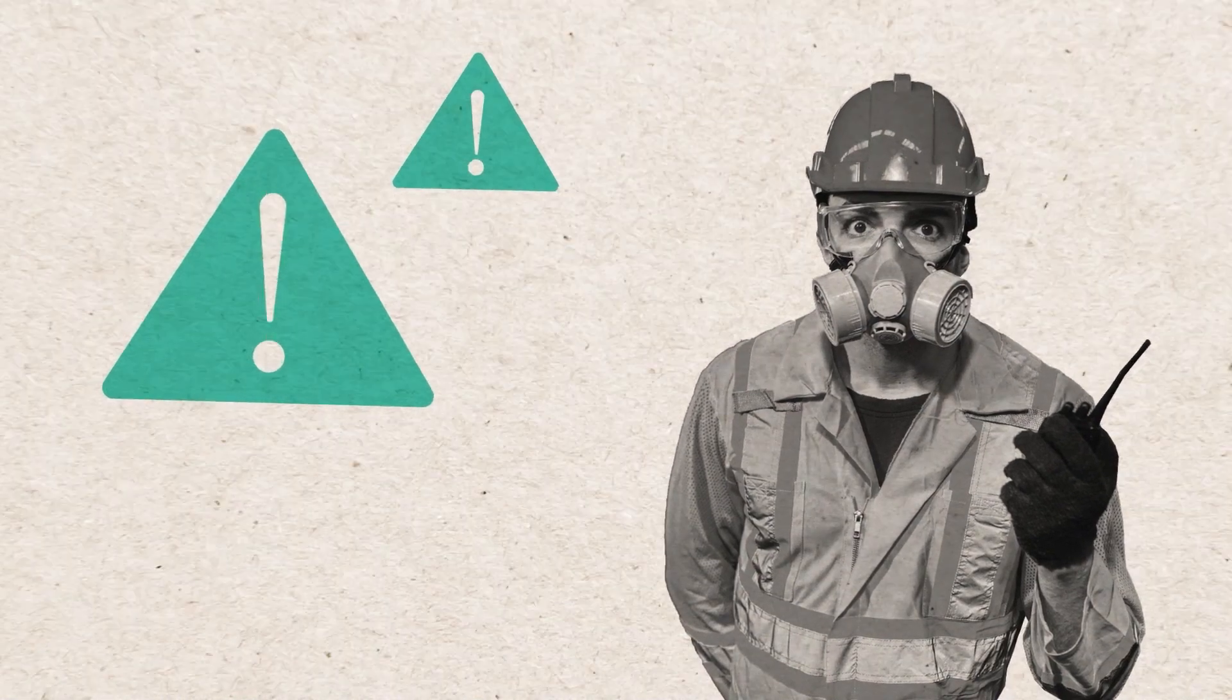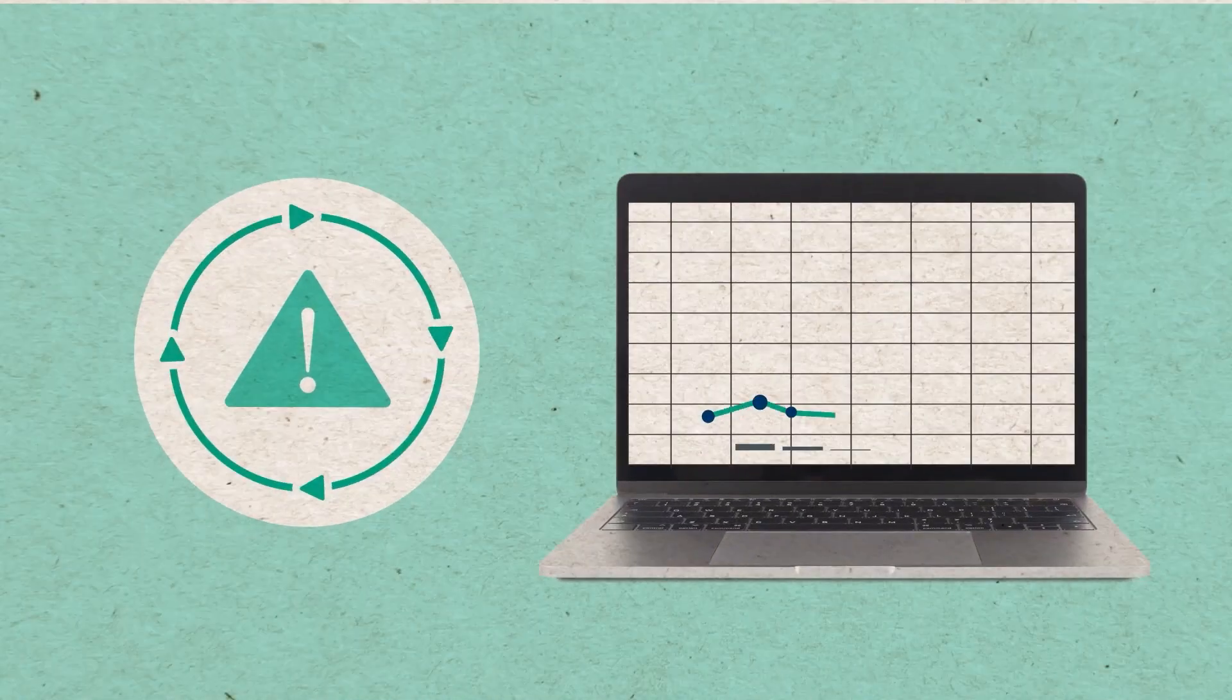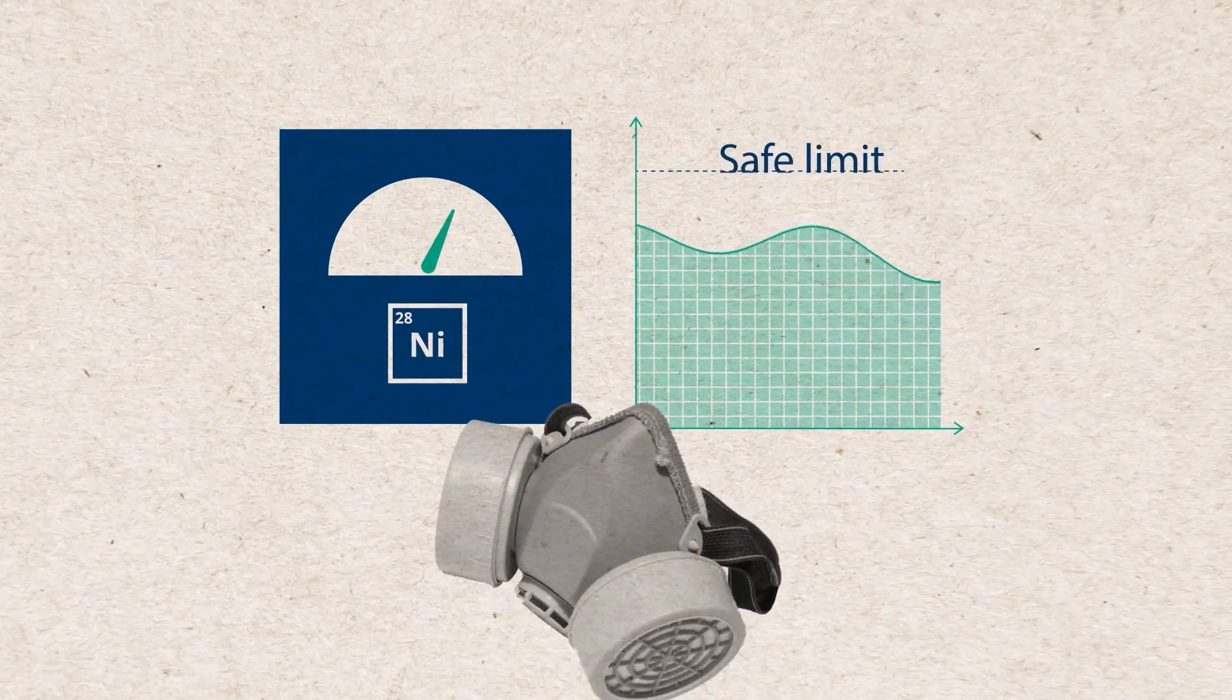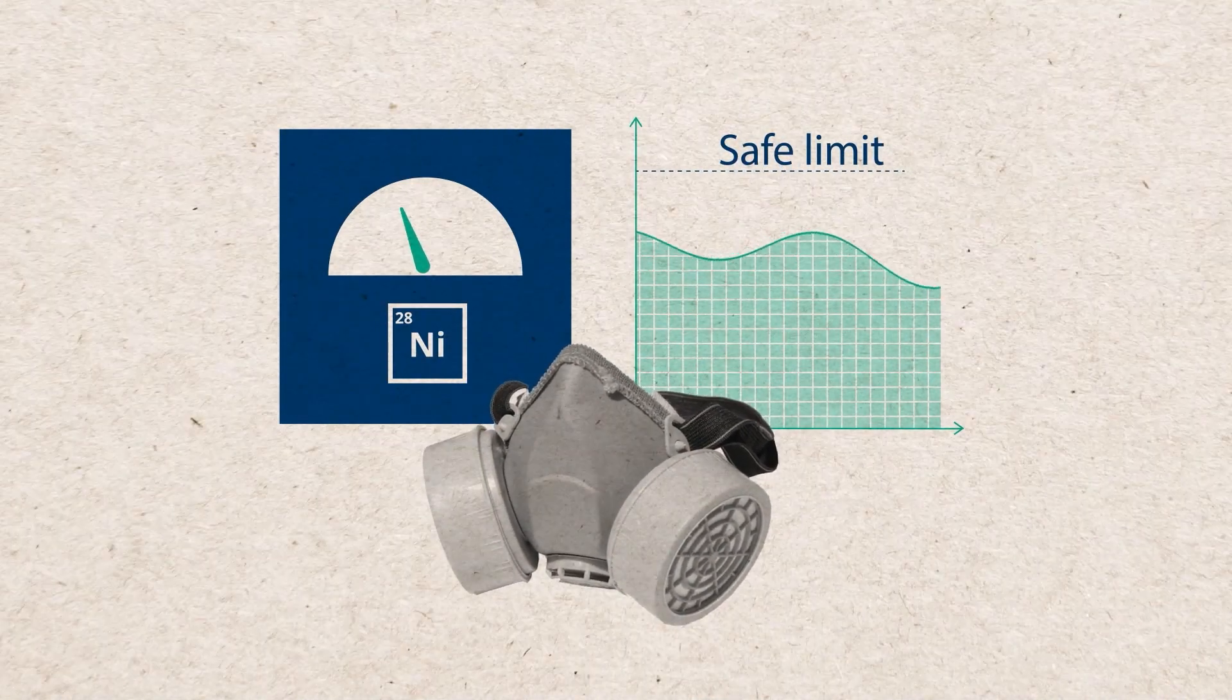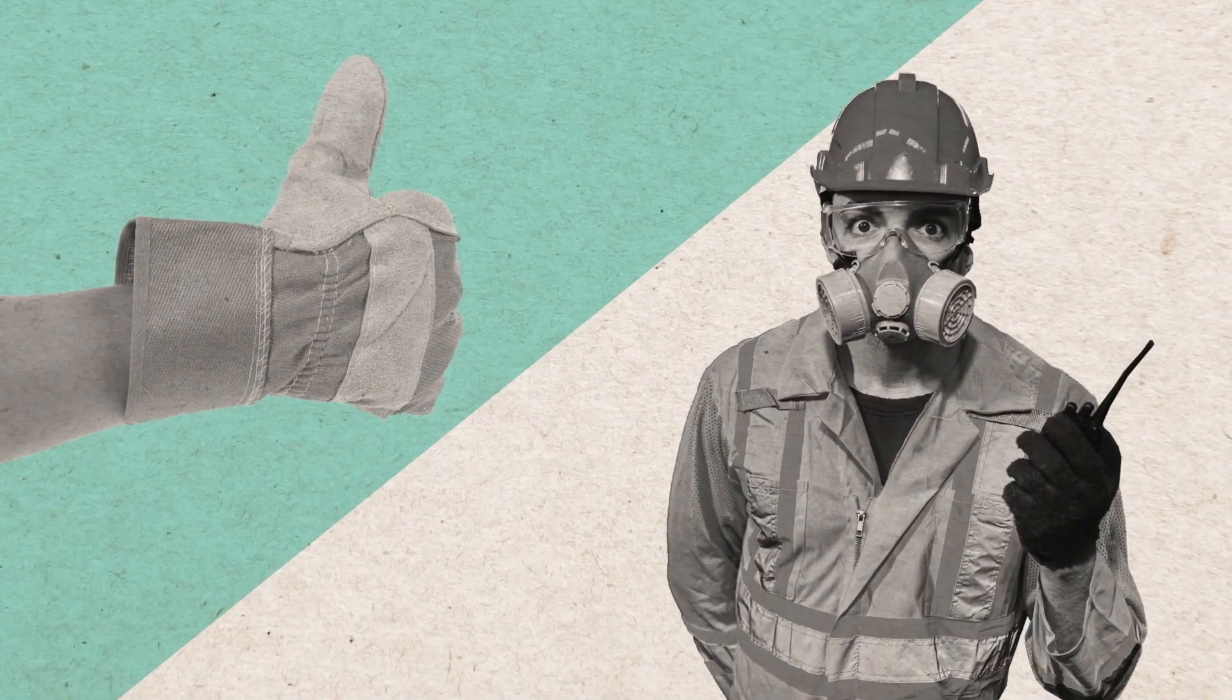In an industrial context, nickel-related health risks can be associated with workplace air and skin exposures, but these risks can be meticulously managed as well. Rigorous science-backed safety measures such as continuous monitoring, exposure limits, and industrial hygiene techniques are available to keep workers and the surrounding environment properly protected.